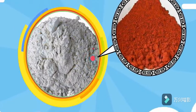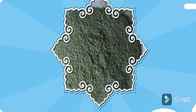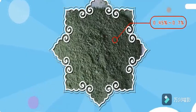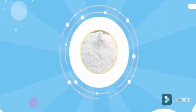The color is mainly determined by iron oxide. Generally, Portland cement contains more iron oxide and looks gray.